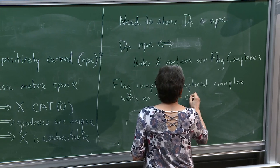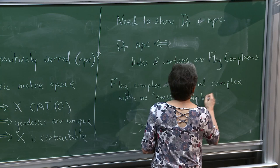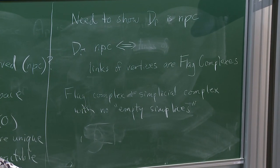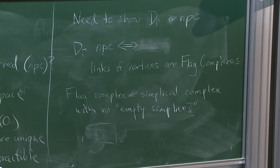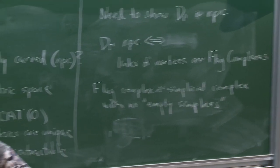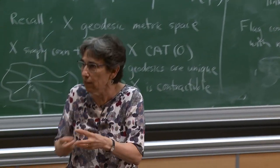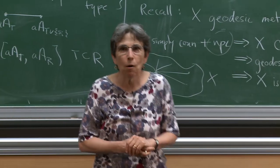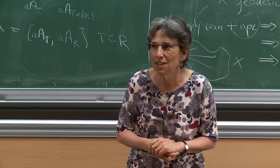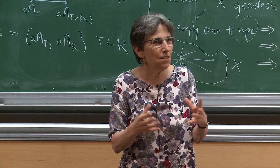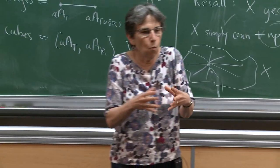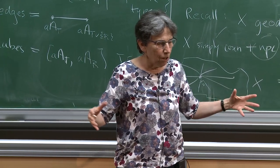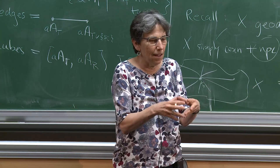What I mean by 'no empty simplices': whenever I see the one-skeleton of a simplex, that simplex is filled in. You never see, for example, a triangle with no filling. Whenever I see the one-skeleton of a simplex, the simplex is there. The one-dimensional space is a graph.